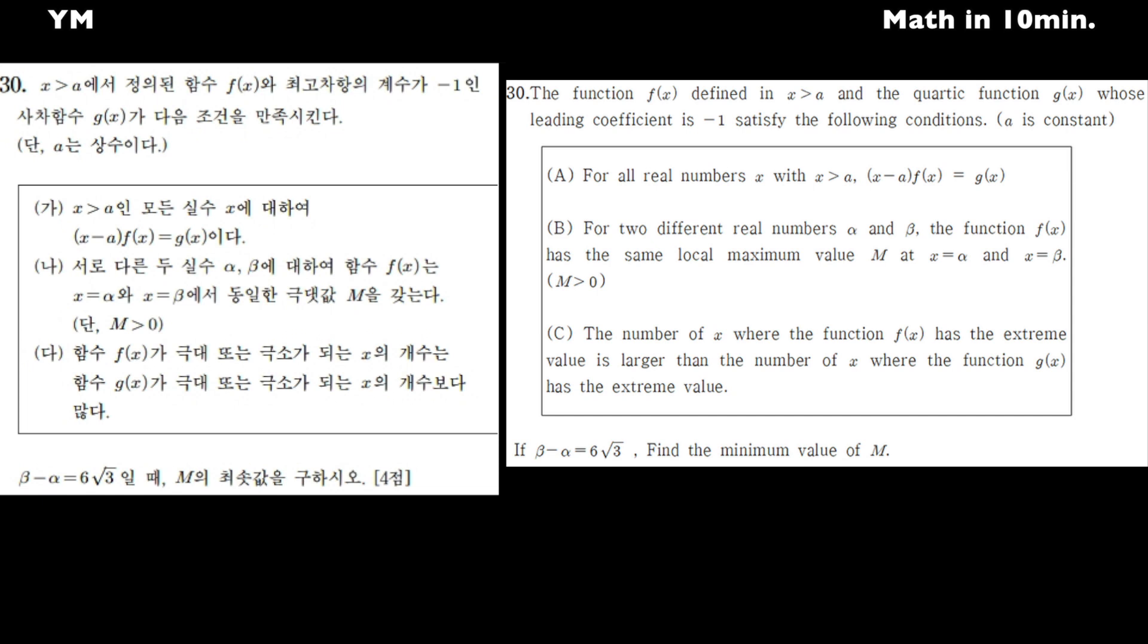The function f defined in x ≠ a and the quadratic function g whose leading coefficient is negative 1 satisfy the following conditions. At this time, a is constant. Just regard it as a real number a.